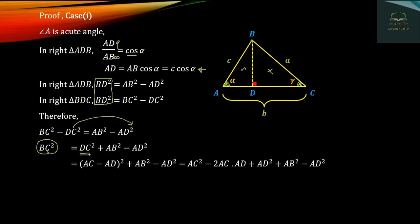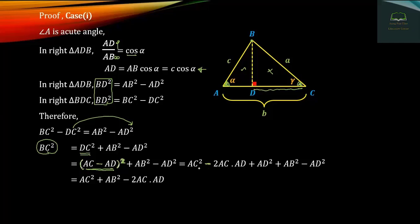Substituting terms: DC² expressed as (AC − AT)². So (AC − AT)² expands as AC² − 2·AC·AT + AT². Therefore BC² = AC² − 2·AC·AD + AB².